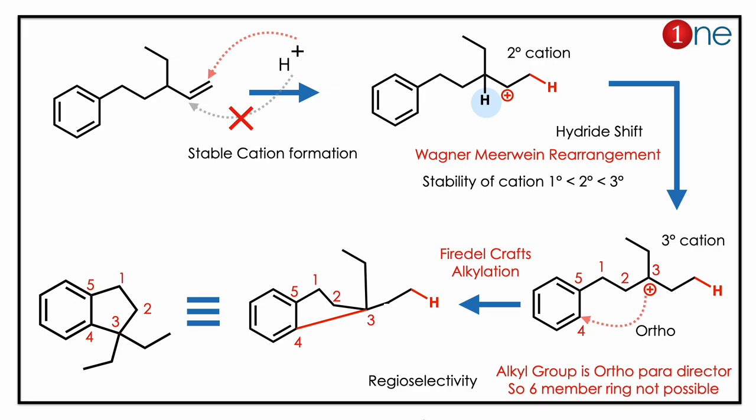In the first step, the cation adds to the alkene. There are two possibilities, but the secondary cation forms first. It then has the possibility of forming a tertiary cation, so a hydride shift occurs due to the Wagner-Meerwein rearrangement, giving you the more stable tertiary cation.